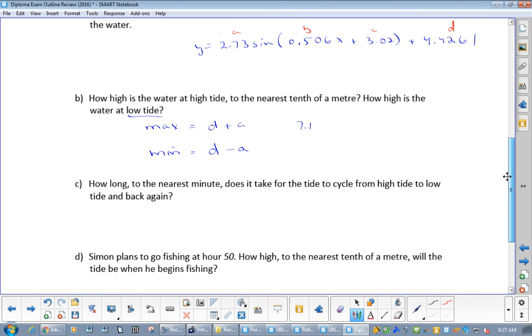So max would be 7.1 - I don't want to give it away. Oh yeah, well sorry. So is 4.4261 plus 2.73, and you will get 7.15. The min is 4.4261 minus 2.73, which equals 1.69.